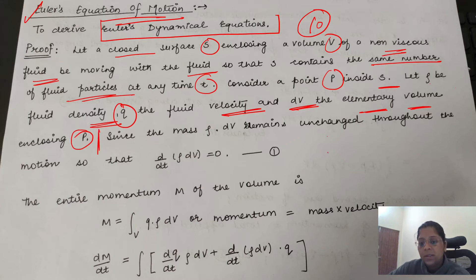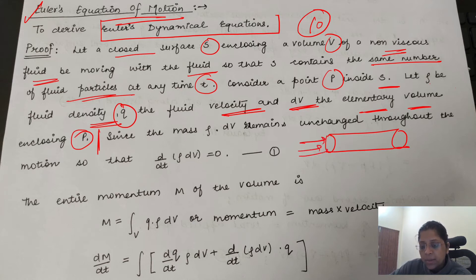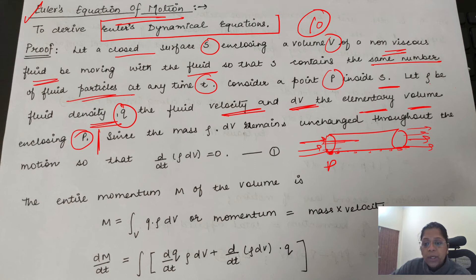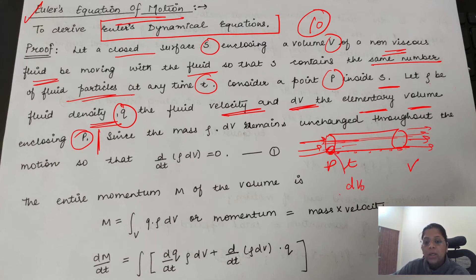अब तक जो कहा गया: हमने एक पैलो pipe लिया, यही chapter 1 में भी किया था। यहाँ पे बहुत सारा पानी left side से right side की तरफ जा रहा है — fluid। इस पूरी body का surface area है, इसके अंदर से जब particle जाएंगे, हमने कहा एक particle P point पे है। किसी time t पे जो volume है इस पूरे पैलो pipe की वो capital V है; P point के पास छोटे section की volume dV होगी।